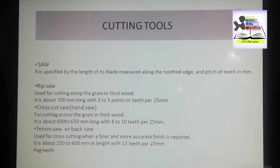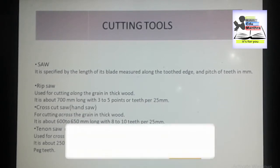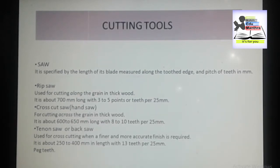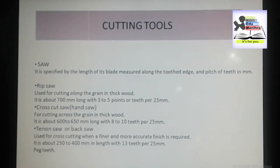Next we have the tenon or back saw. This saw is mostly used for cross cutting when a finer and more accurate finish is required. Remember: when a finer and more accurate finish is required, the tenon or back saw is used. The blade is very thin and is reinforced with a rigid steel back. Tenon saw blades vary from 250 to 400 mm in length.